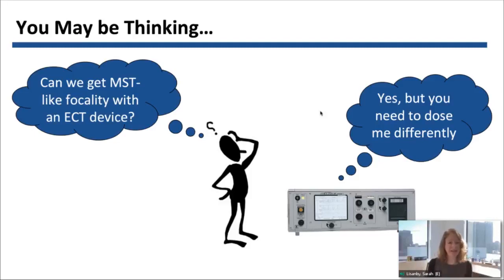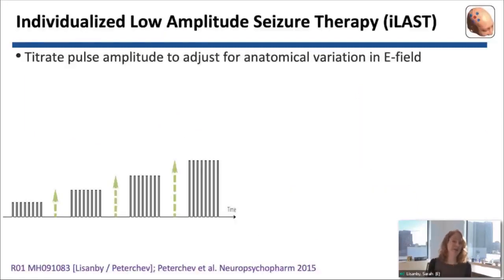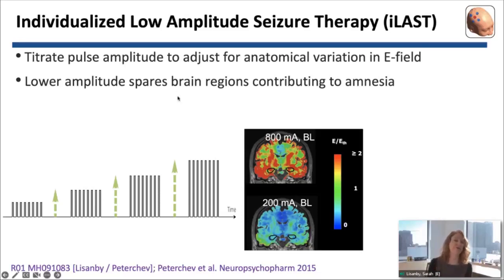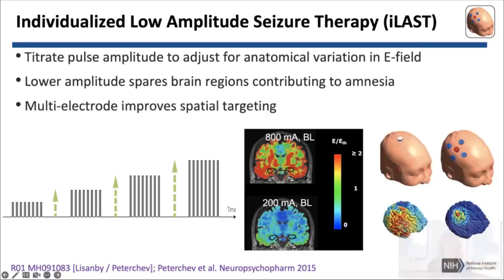You might be thinking: MST is an elaborate device — could you make ECT more focal using an ECT device? The answer is yes, but you need to use the device differently. Conventional dose titration uses high amplitude pulses, but you could titrate the pulse amplitude to adjust for individual differences in anatomy that affect the electric field. You can also couple that with improved electrode arrays — taking a page from high definition transcranial direct current stimulation, you can use multi-electrode arrays for a high-definition version of ECT.